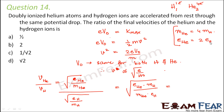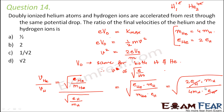Since charge on helium is 2 times charge on hydrogen, and mass of helium is 4 times mass of hydrogen, substituting into the ratio: the charge of hydrogen cancels and the mass of hydrogen cancels, leaving 2 divided by 4 under the root, which gives 1 over root 2. So the correct option is C.